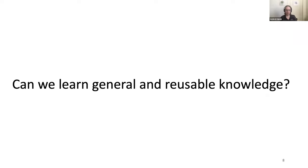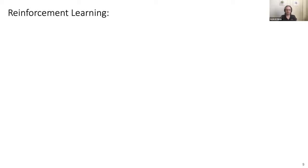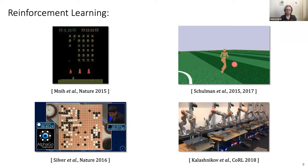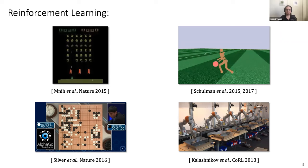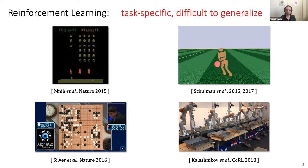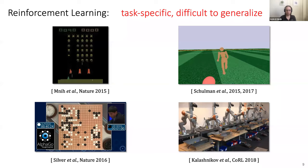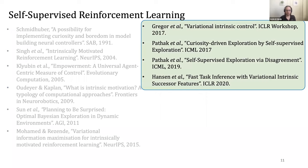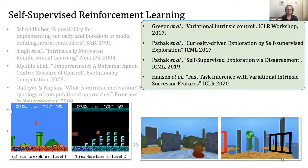Model-free RL has shown impressive results in video games, board games, and robotic tasks, so maybe it could also be suitable for building generalist autonomous machines. However, these agents are usually trained for a single specific task from scratch and require a large amount of task-specific interaction. The policy learned transfers poorly to new tasks. There's plenty of work on self-supervised RL, where the agent learns skills useful for other tasks later, but it is unclear how to use these approaches to solve new tasks — adapting to a new task requires fine-tuning, which is very inefficient.